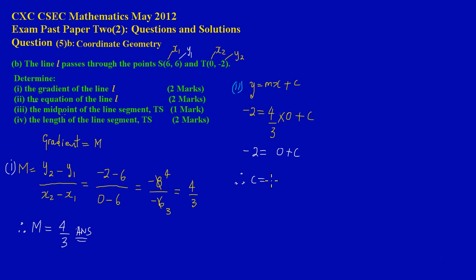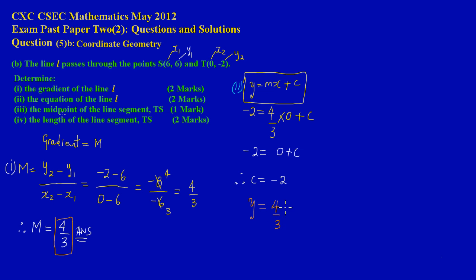Therefore c = -2. Since the equation of a straight line must always be in the form y = mx + c, we can now write the full equation. Substituting m = 4/3 and c = -2, the equation of the line is y = (4/3)x - 2. That is the answer for part 2.